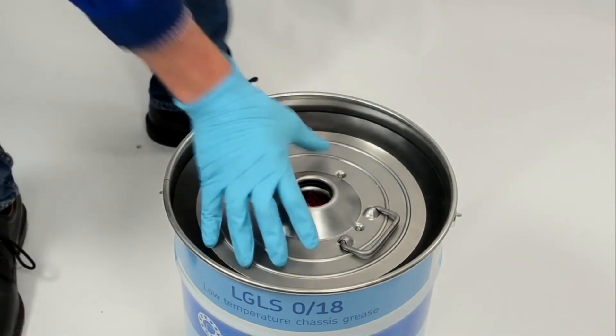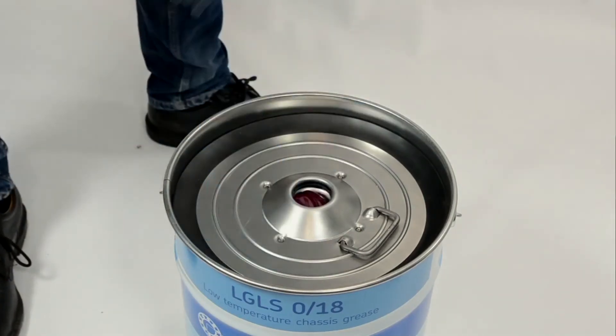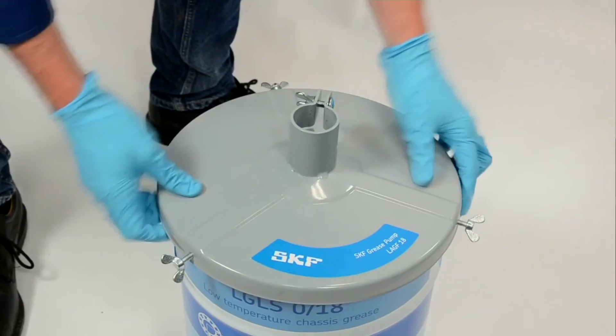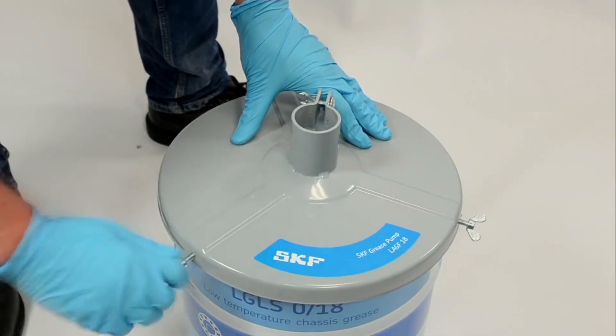Just place the follower plate on top of the grease until the grease comes through the center hole. This helps exclude air from the pump.